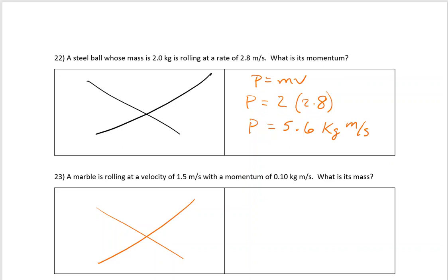Problem 23. A marble is rolling with the velocity, there's my velocity. In a momentum, that's my P. What is the mass? So P equals M times V. In this case, they give me the momentum was 0.1, the mass is what they want us to find, the velocity is 1.5. So we divide both sides by 1.5, and the mass is 0.067 kilograms.